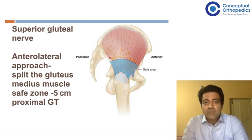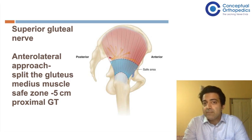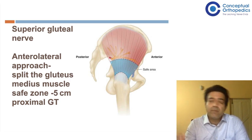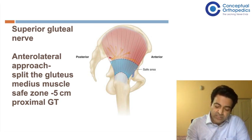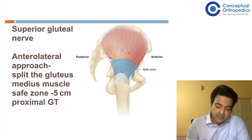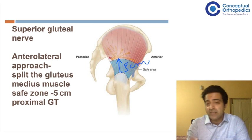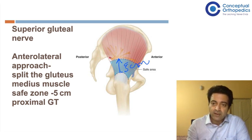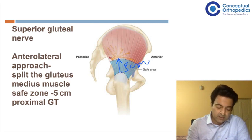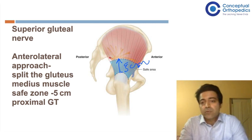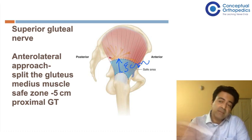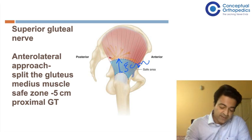The superior gluteal nerve is also at risk of compression, especially with the direct lateral or Hardinge approach. An important practical tip: never extend the incision beyond 5 cm from the tip of the greater trochanter. The safe zone is broad posteriorly and becomes narrow as it goes more anteriorly — it may be 5 cm at its broadest posteriorly, narrowing as it moves anteriorly.